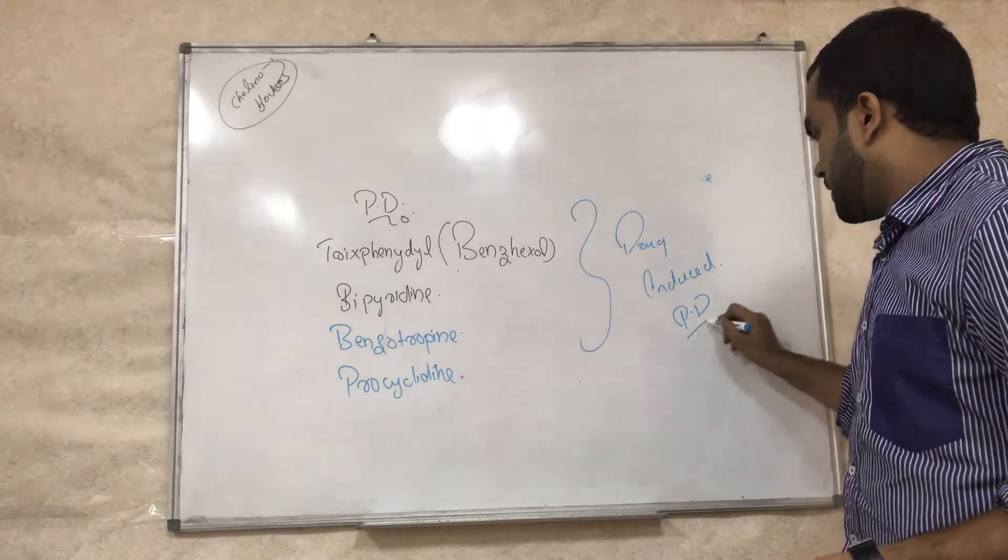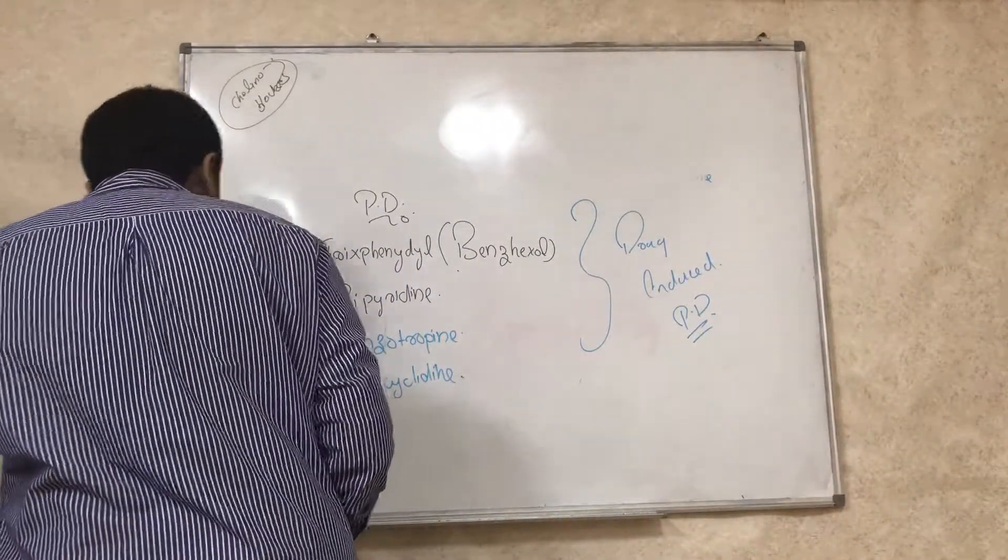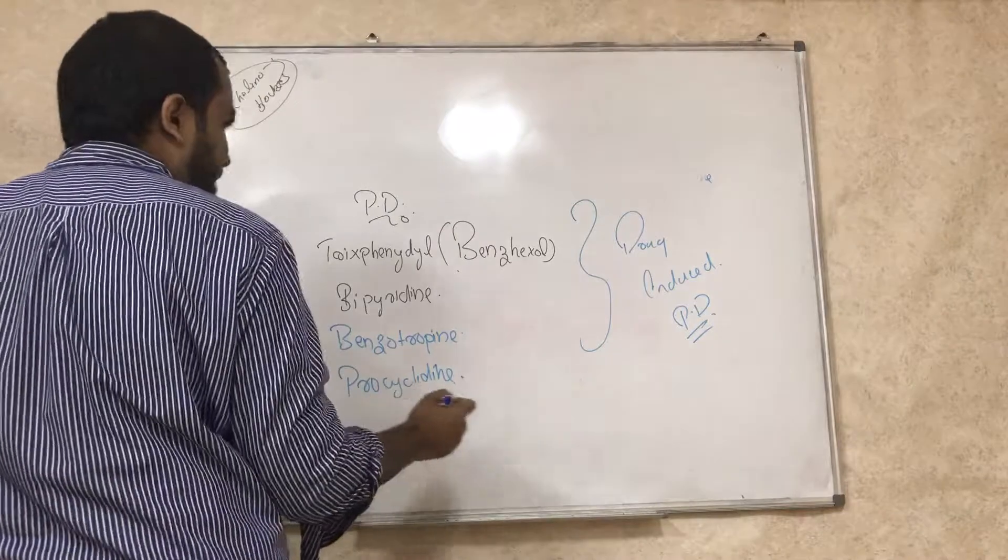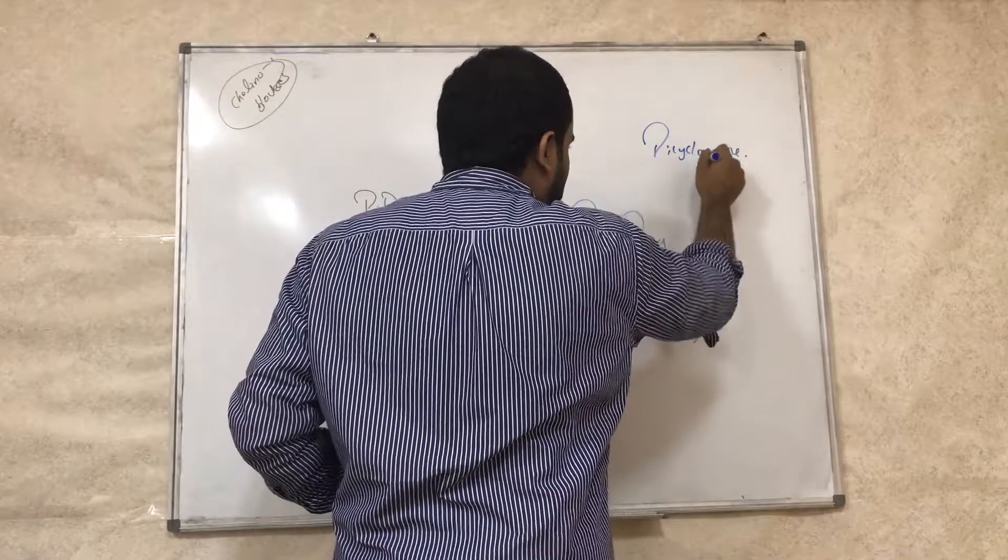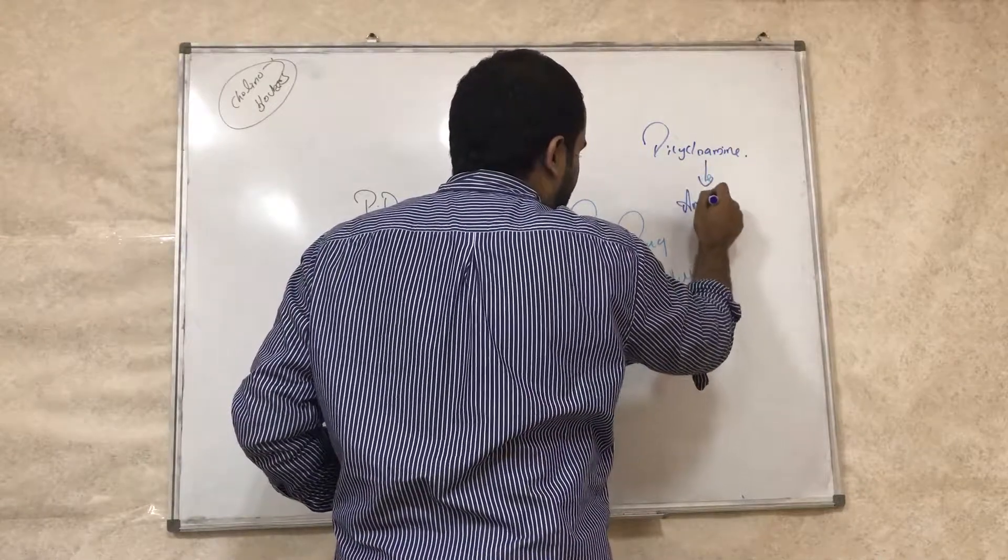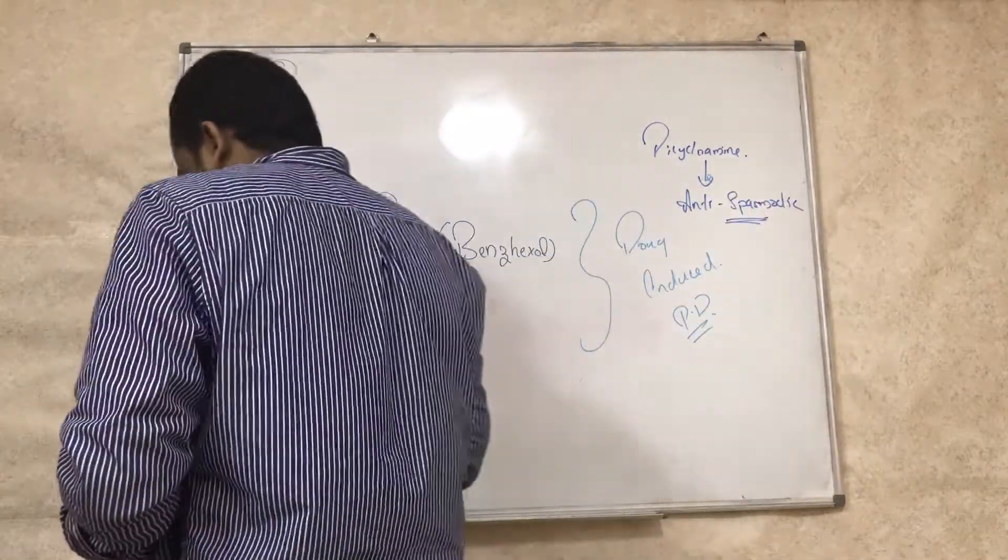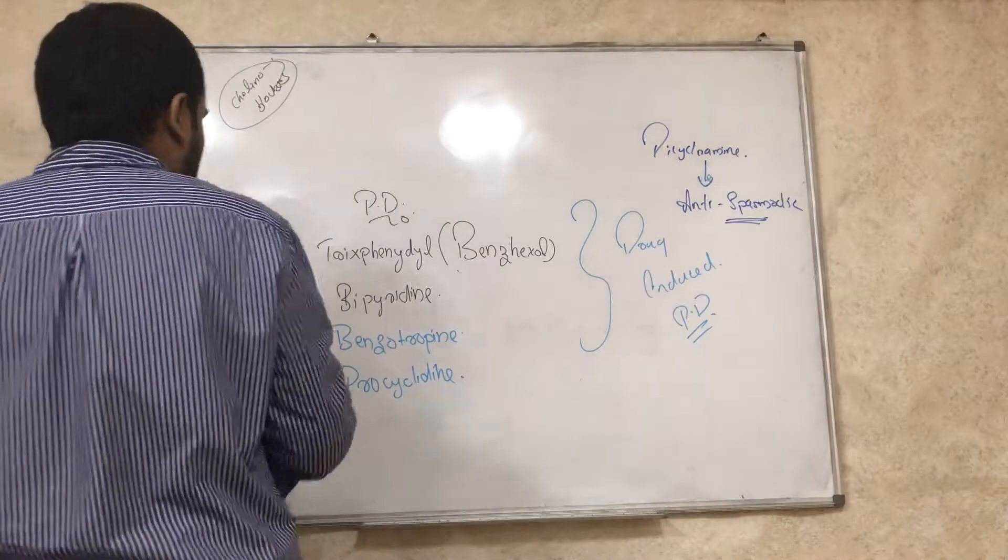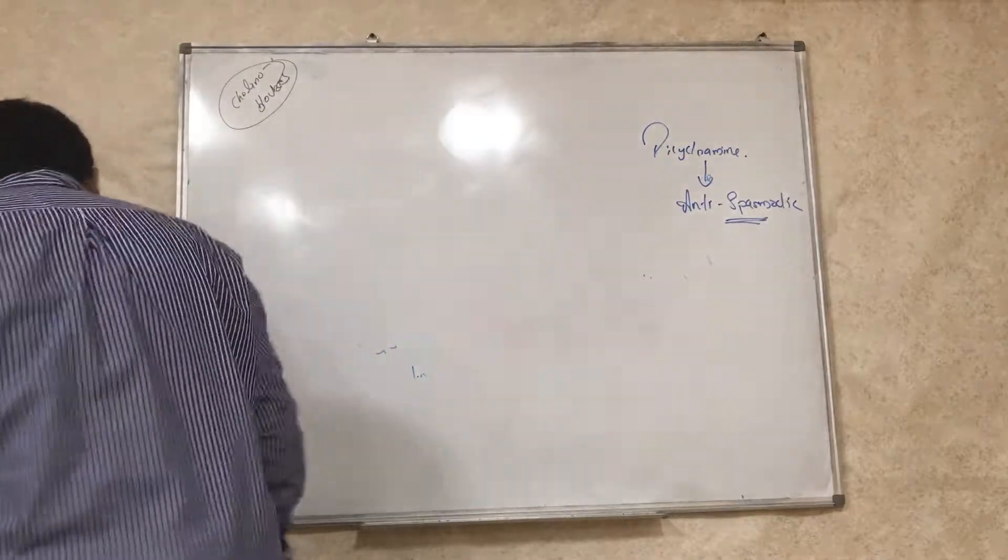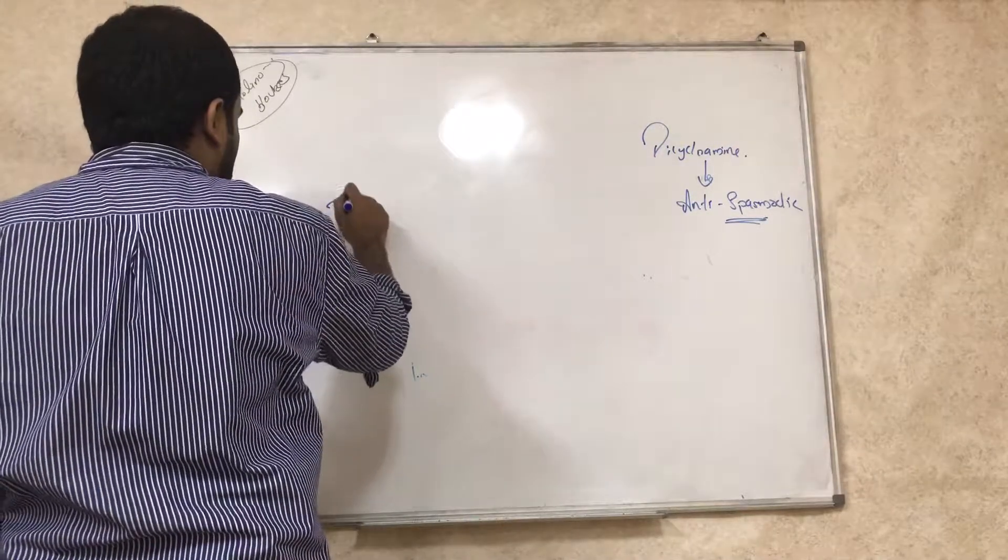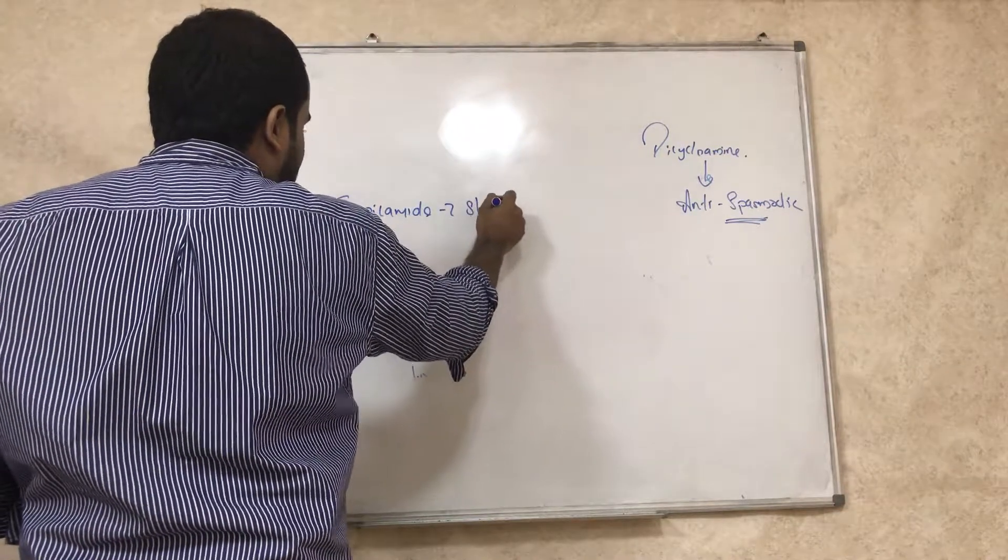Now next thing is we read about dicyclomine. Dicyclomine is also a cholinoblocker. This is used as an antispasmodic drug, antispasmodic. So recently discovered. Then we have tropicamide. Tropicamide is anti-mydriatic. Tropicamide - it is the shortest, tropicamide, shortest acting.